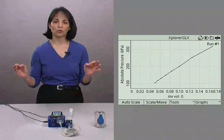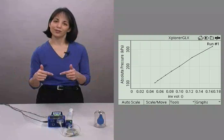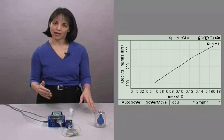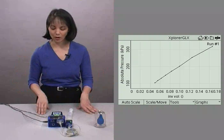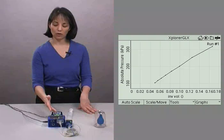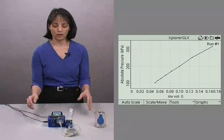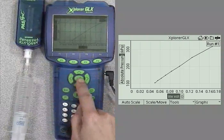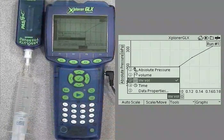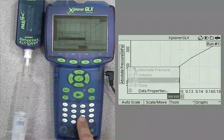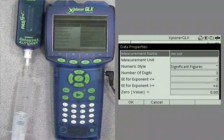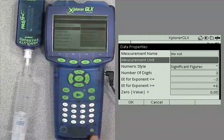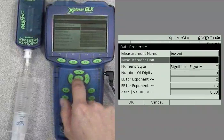And the only thing that would make this graph perfect is if we had units on the x-axis. Go ahead and admit it. If your students turn this in, you take points off for not having units. So let's fix our graph display so that we have units. You see that we have inverse volume and then nothing there. So let's go back to our data sources. And for our inverse volume, let's select data properties, item number 5 on that menu. There we have inverse volume. Let's drop down to the next field, which is measurement unit. Push the check mark.